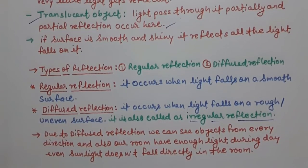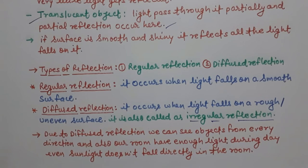Because of diffuse or irregular reflection, we are able to see objects from every direction. Also, in our room, when sunlight does not directly fall in, there is still a sufficient amount of light because of irregular or diffuse reflection. I am going to include a diagram related to types of reflection to show regular and diffuse reflection so you can easily understand.